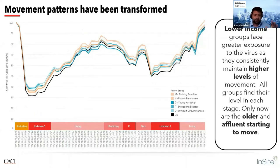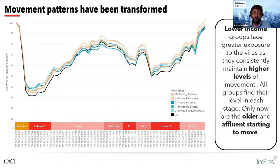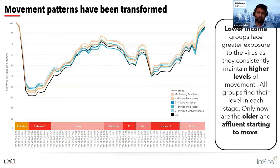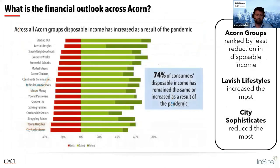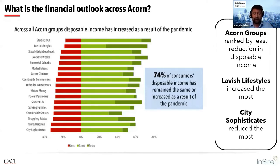Looking at five of the least affluent ACORN groups with the national average shown: all of these groups were consistently moving above national average levels. These lower affluent groups are facing greater exposure to the virus. The inequality across ACORN isn't just in how much we move, but also how much we can spend. This graph shows ACORN groups ranked by least reduction in disposable income.